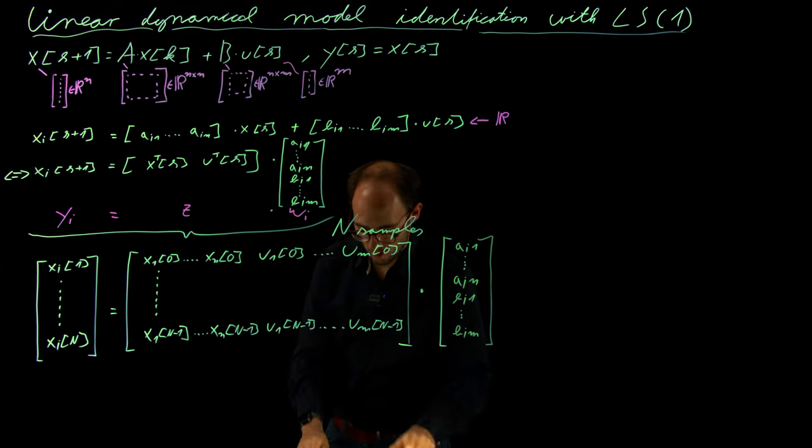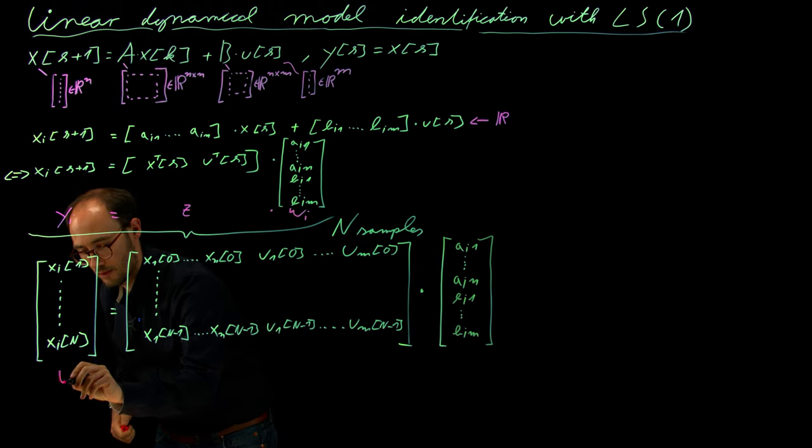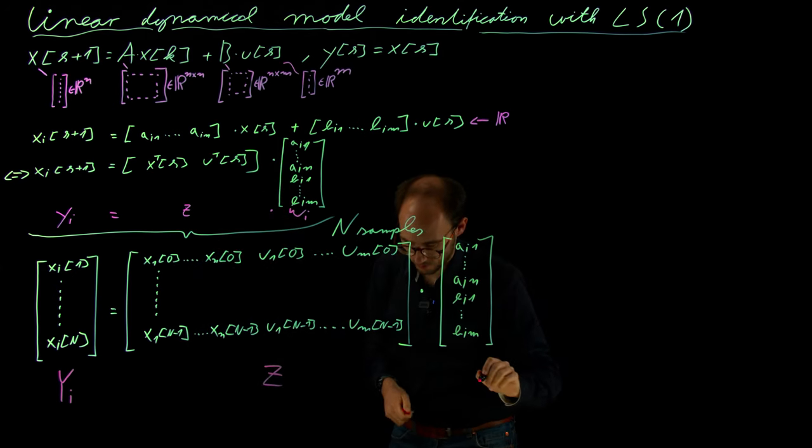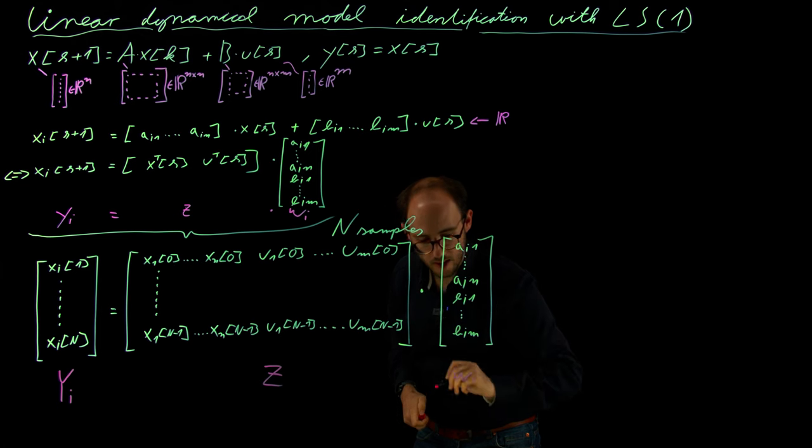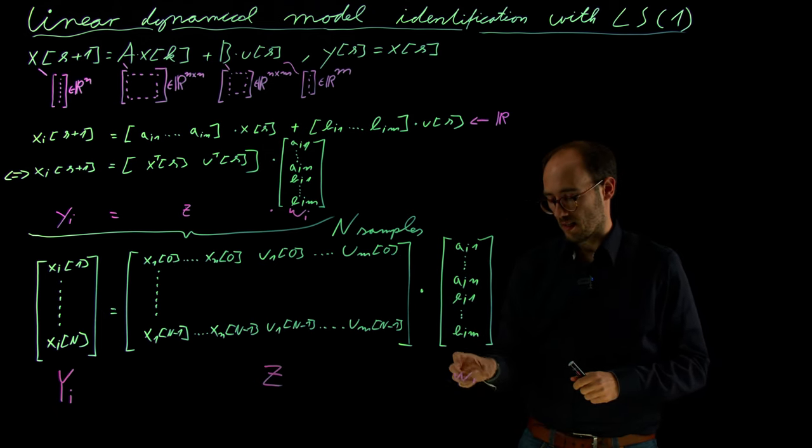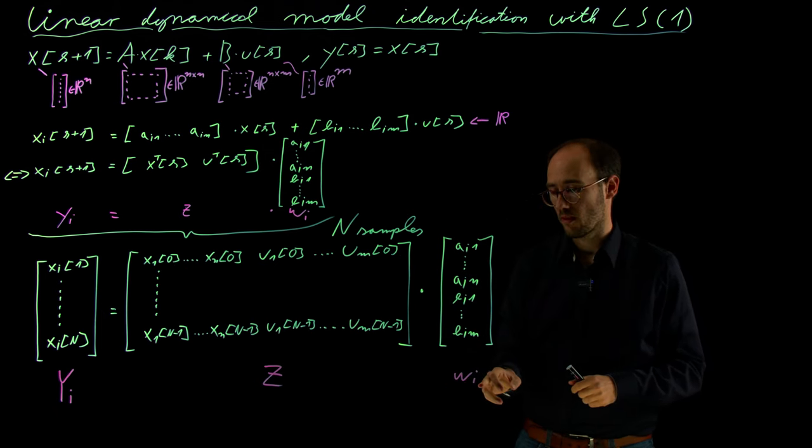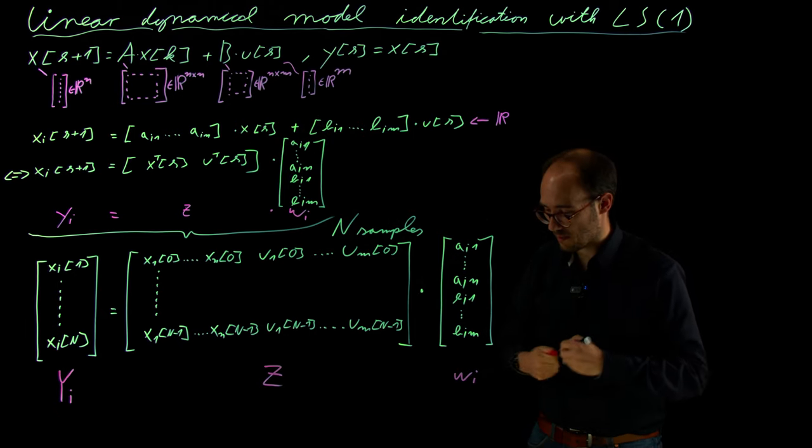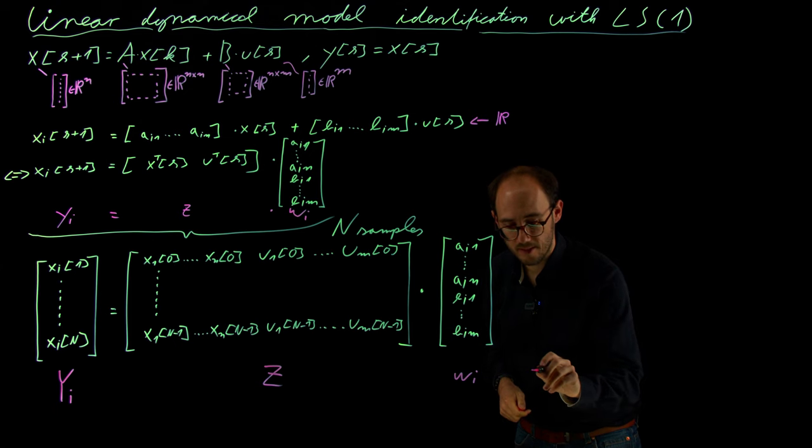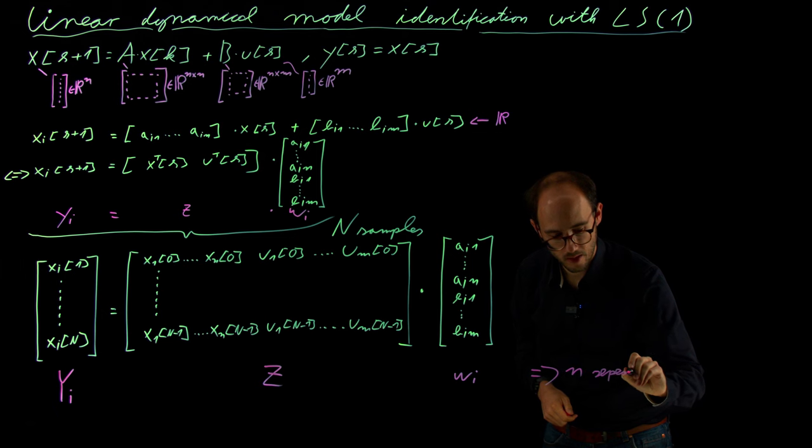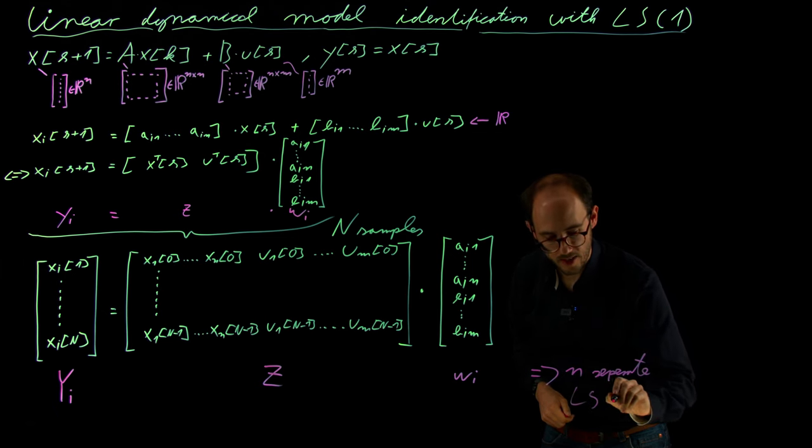And that also looks very familiar, that would be the capital Y, the capital Z, and the unknown parameter vector w. I'm adding here a subscript i to that because, as I said, this is the i-th row out of this system description. So that basically means we get small n separate least squares problems.